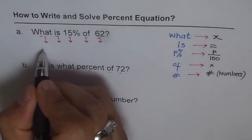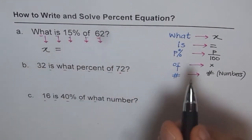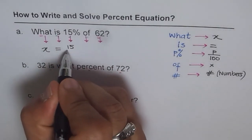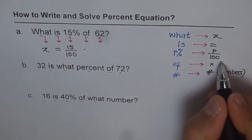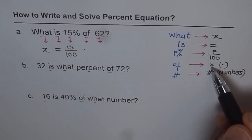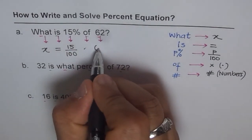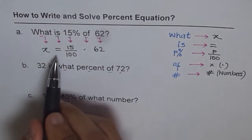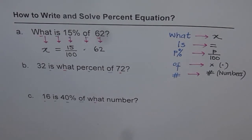So what means x. Is means equal to. 15% is P, is 15 for me. So it is 15 over 100. Of means times. I'm putting a dot here. So that means we put a dot most of the time so that we don't get confused between the variable x and this x for operator. And 62 is a number. You get it. X equals 15 over 100 times 62.